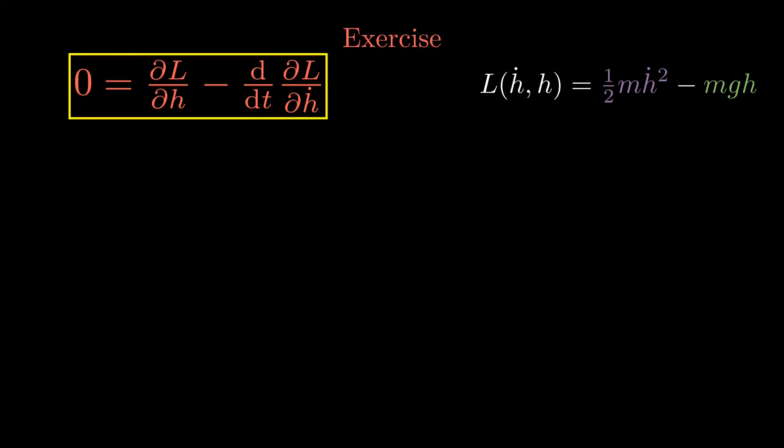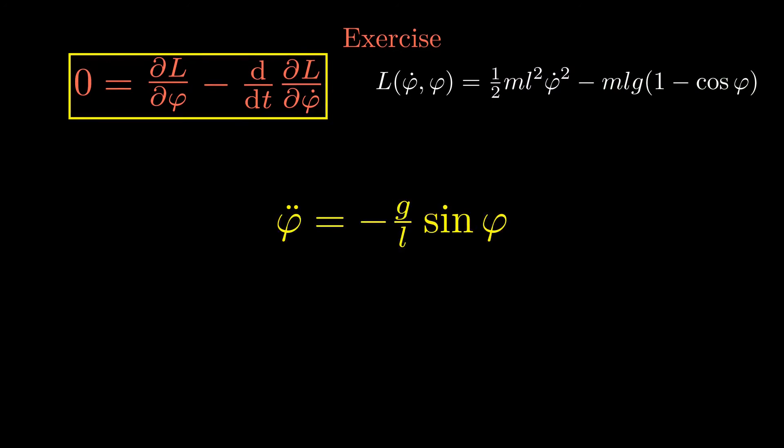It is a nice exercise to repeat the calculations for the pendulum. This time the Lagrangian depends on the angular coordinate phi and its time derivative. The calculations from before repeat very similarly. Unlike the free-fall example, it is not possible to describe the motion of the pendulum by elementary functions that are taught in school. On the other hand, an explicit solution is not necessary to simulate the process.